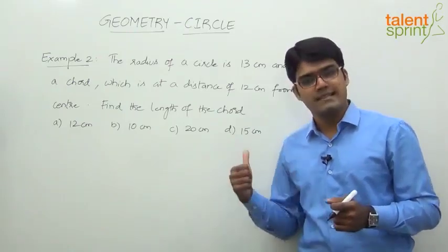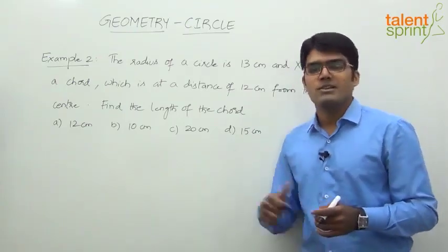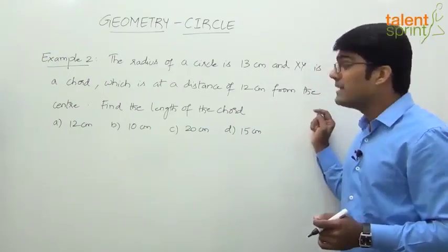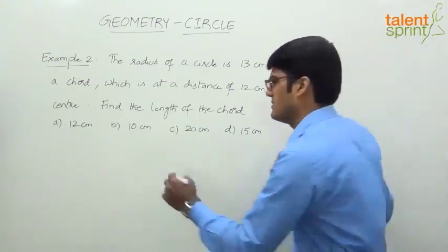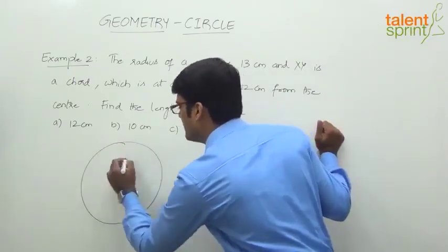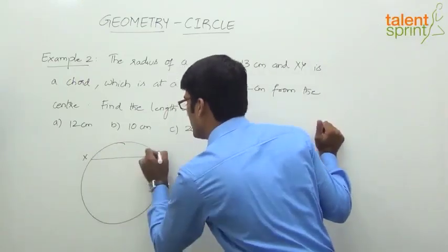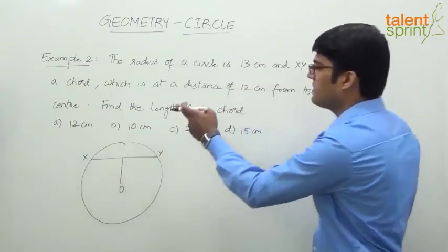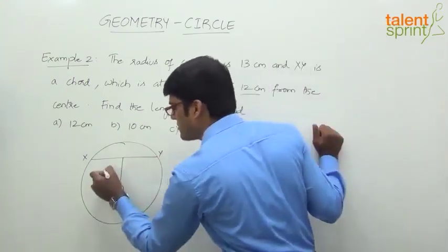But there is an important point which you need to remember here. Let us understand that while solving this question. So it says the radius is 13 and XY is a chord. The chord is at a distance of 12 centimeters. So take a circle. Let's say this is the chord XY.